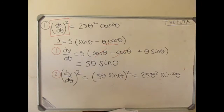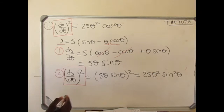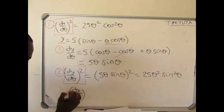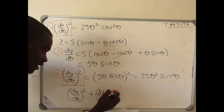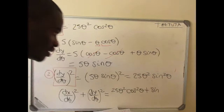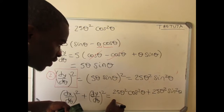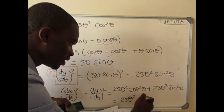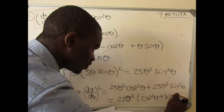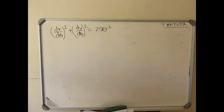So you can see now we've managed to have the two parts of the formula. Once you apply the formula, we expect (dx/dθ)² + (dy/dθ)², which will give us 25θ²cos²θ + 25θ²sin²θ. You have a common factor of 25θ², so you factor that out: 25θ²(cos²θ + sin²θ). If you look at your identity, cos²θ + sin²θ equals 1. So after this step we have the part of the formula ready.